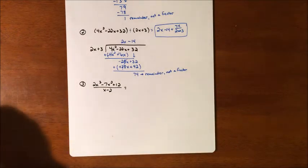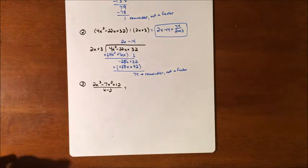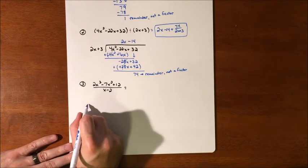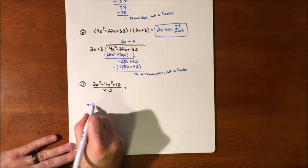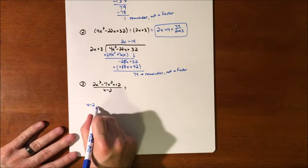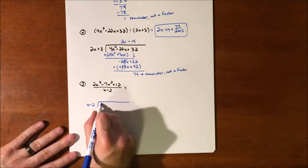To do the math on this, whatever we're dividing by is going to go on the outside. So we're going to have x minus 2 on the outside. And on the inside...